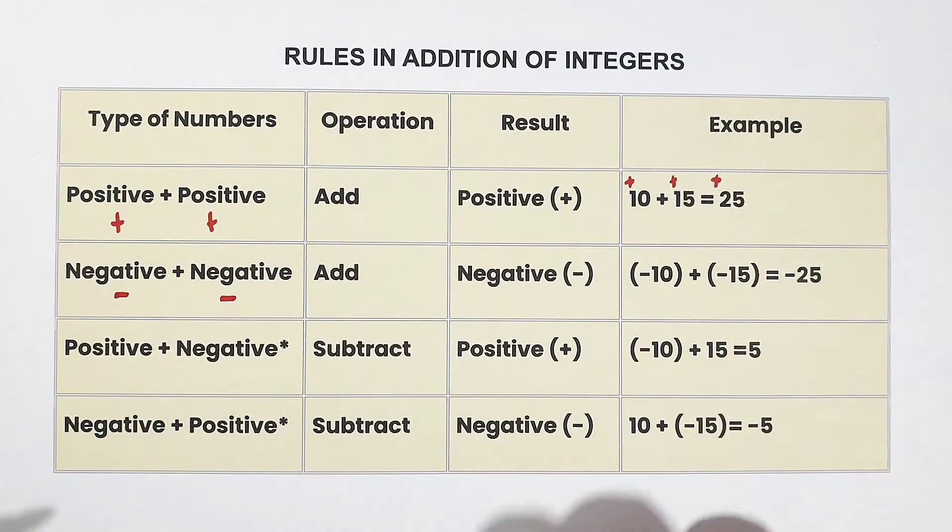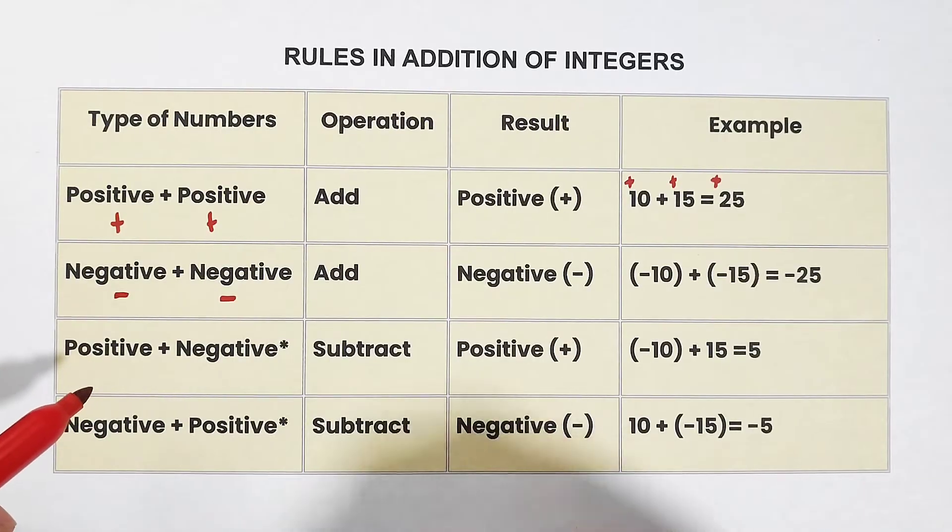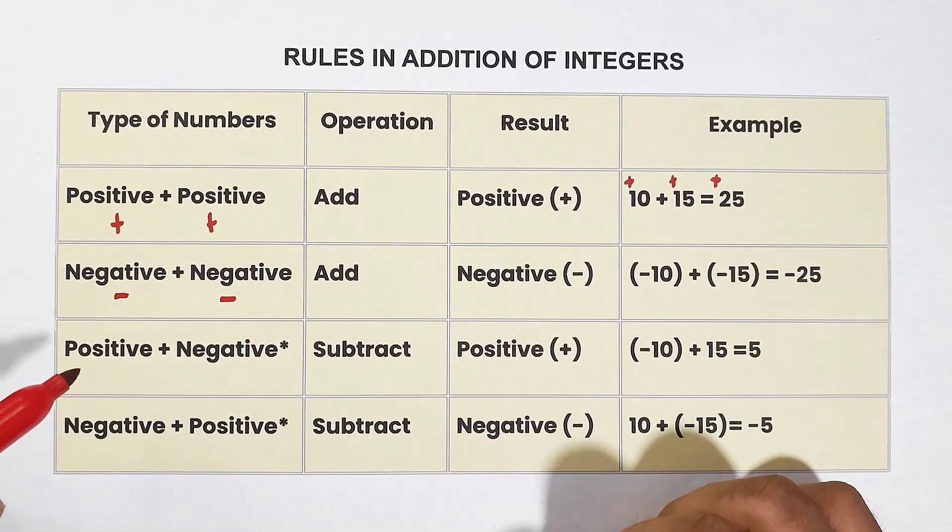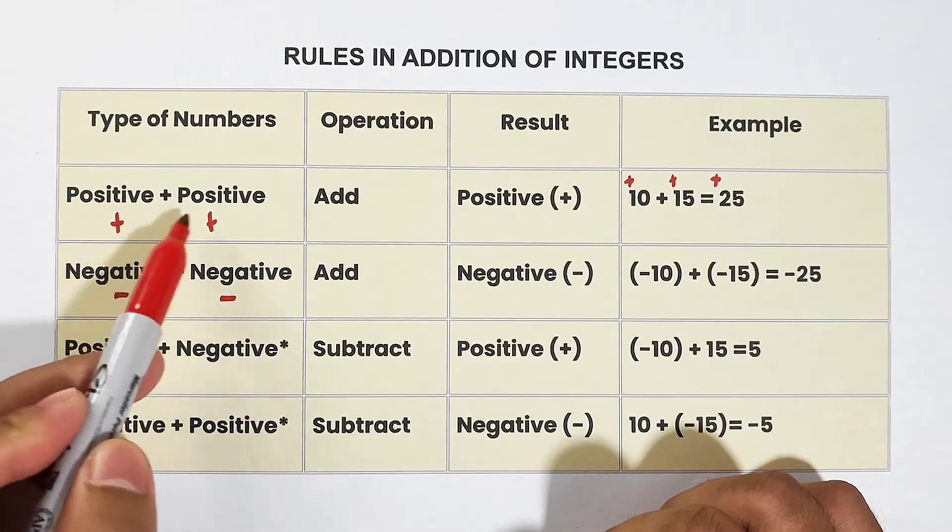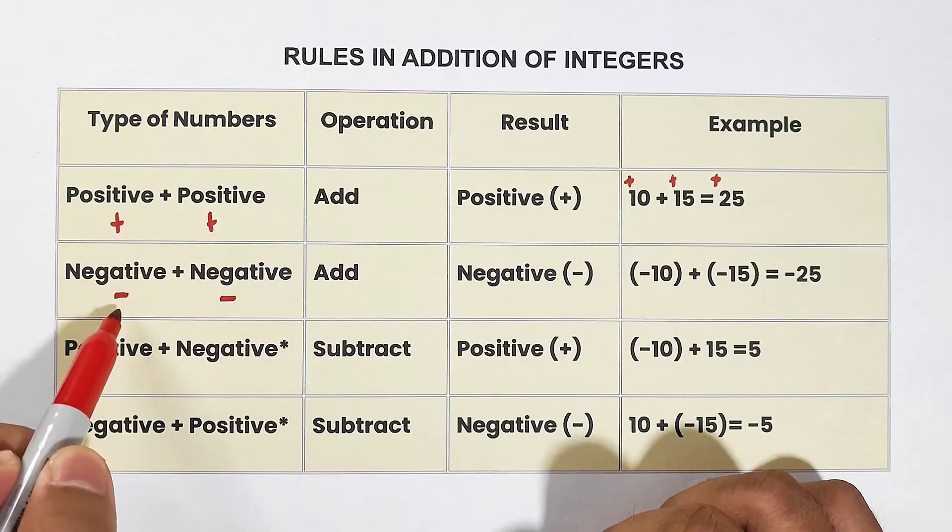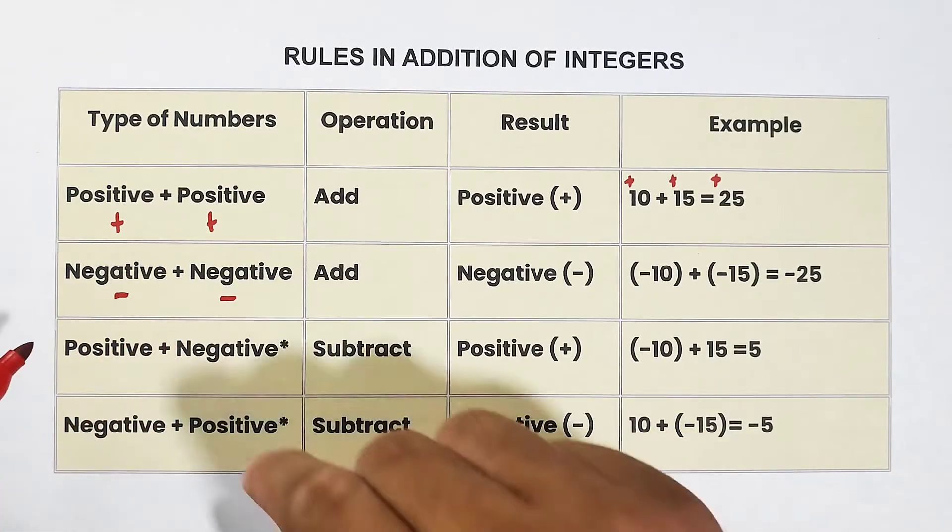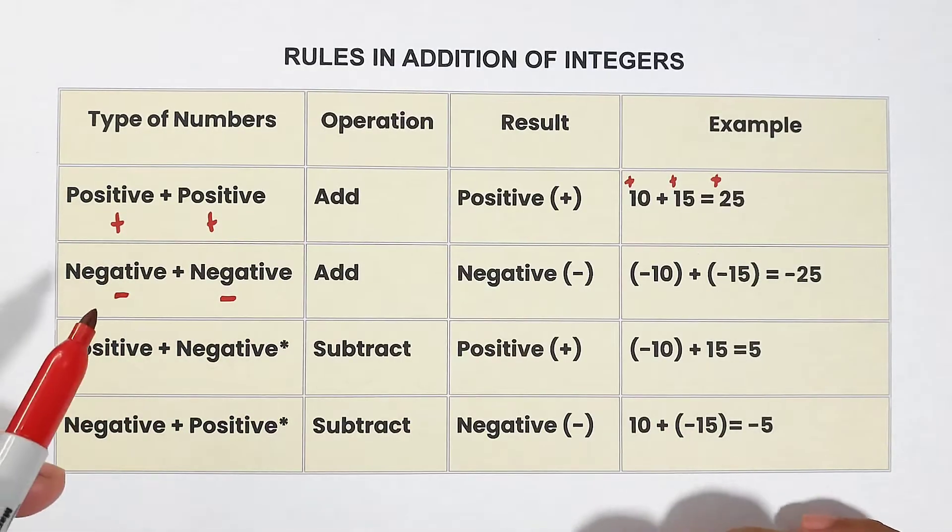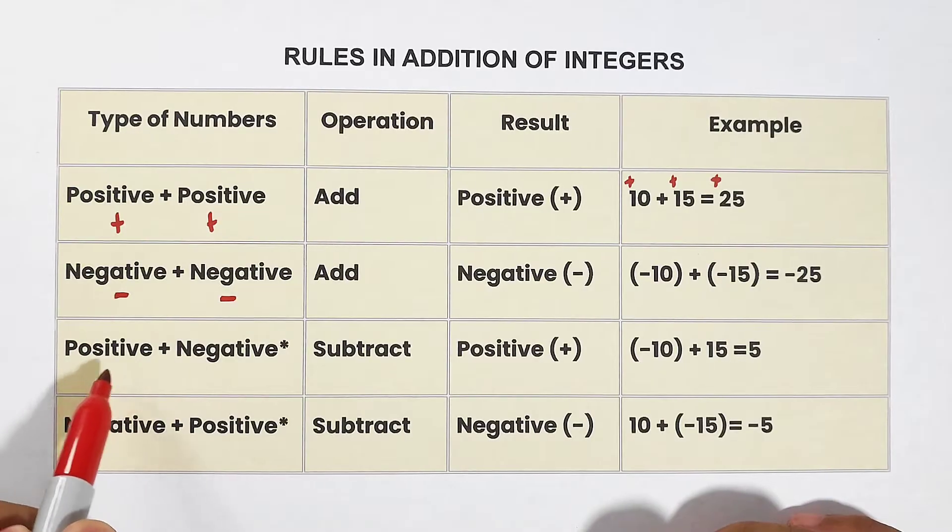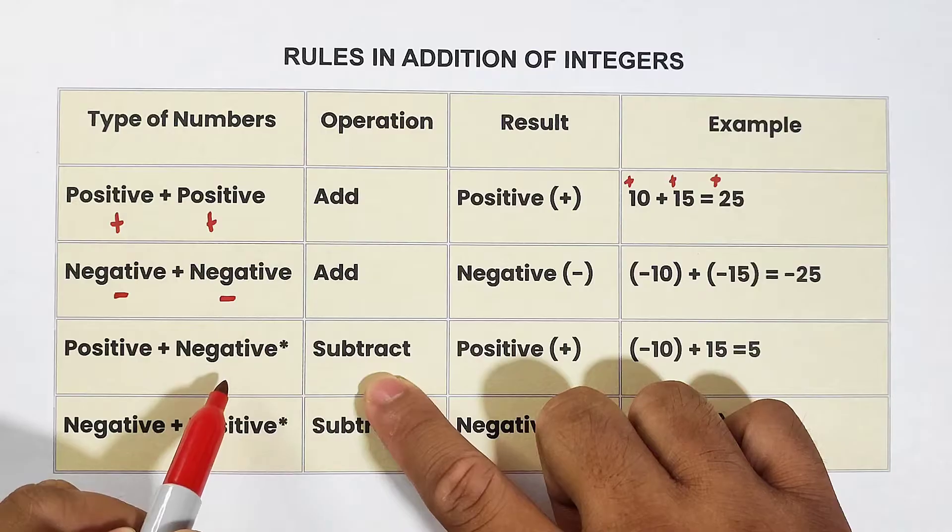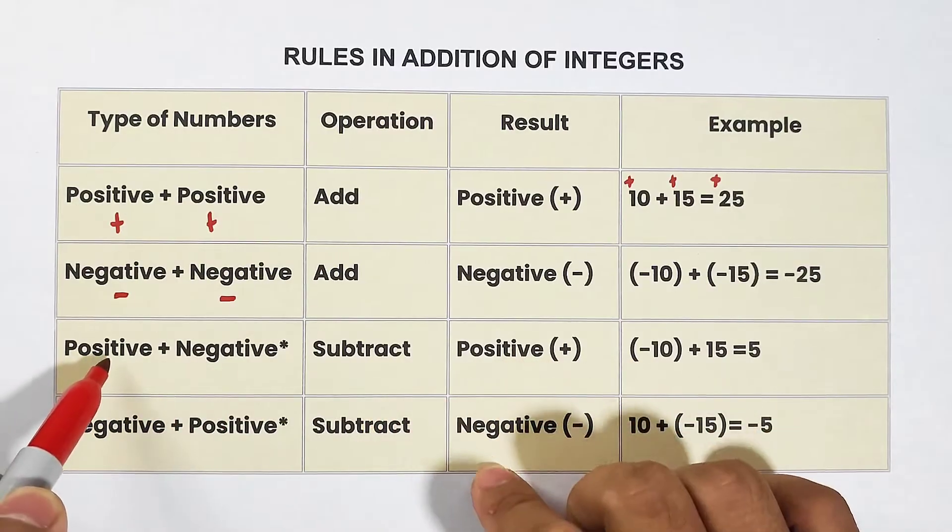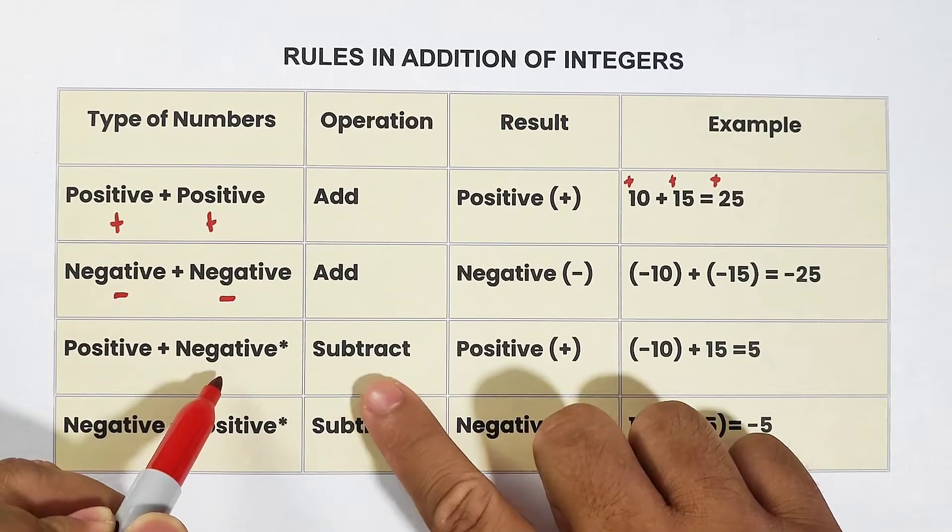Let's move on with the third rule. This is the third scenario we're in, where different signs are being added. Because the first one are both positive, the second one are both negative. This one is different signs. So let's do this one. When positive plus negative, you need to subtract. Again, when positive plus negative, you need to subtract.